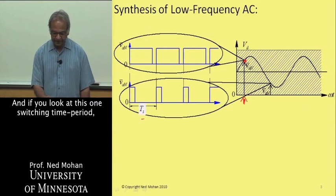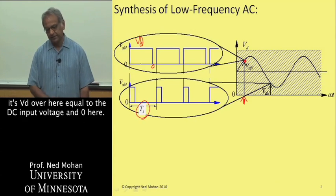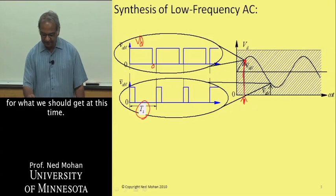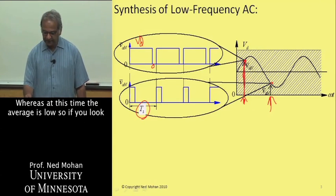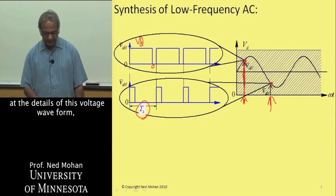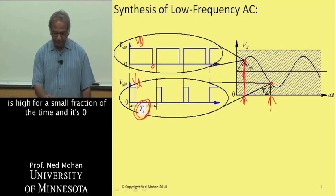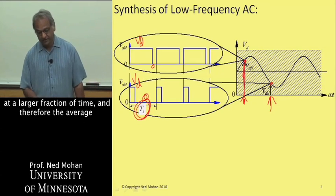If you look at this one switching time period, it's VD over here equal to the DC input voltage and zero here. So the average is high, as you would expect at this time. Whereas at this time, the average is low. During the switching time period, the voltage is high for a small fraction of the time, and zero for a larger fraction of time.